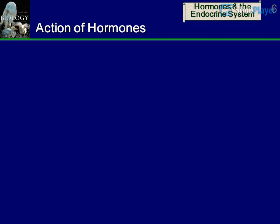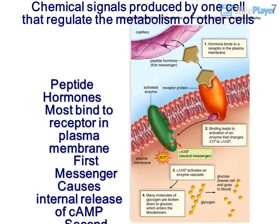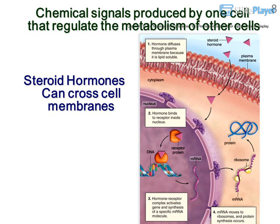Action of Hormones: Chemical signals are produced by one cell and regulate the metabolism of other cells. Peptide hormones most commonly bind to receptors on the plasma membrane. The first messenger causes internal release of cAMP, the second messenger. Steroid hormones, by contrast, can cross cell membranes directly.